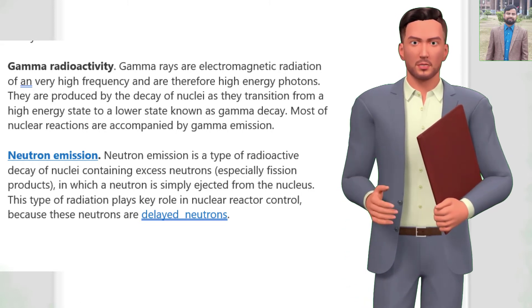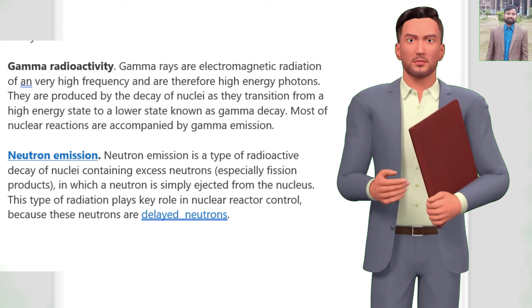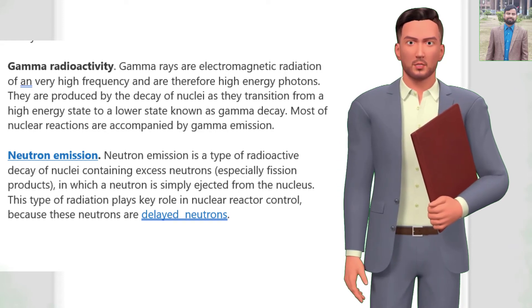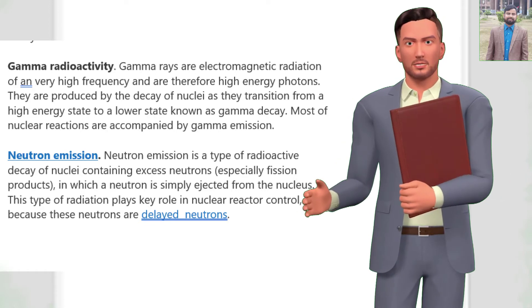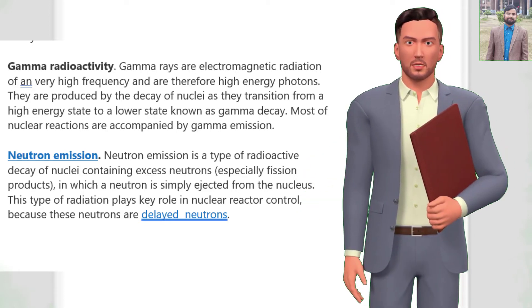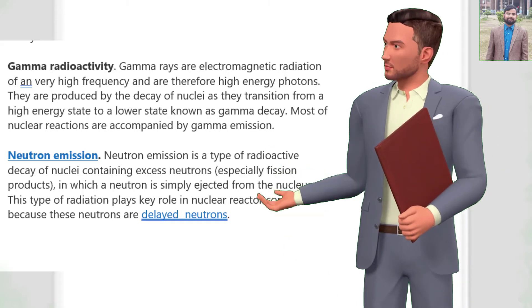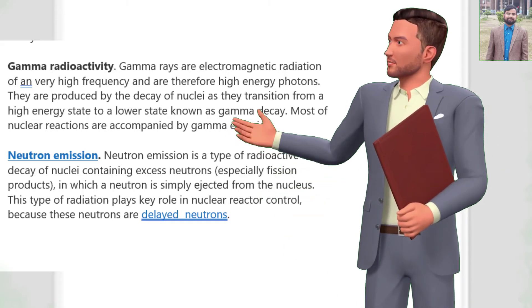Neutron emission: Neutron emission is a type of radioactive decay of nuclei containing excess neutrons, especially fission products, in which a neutron is simply ejected from the nucleus. This type of radiation plays a key role in nuclear reactor control, because these neutrons are delayed neutrons.